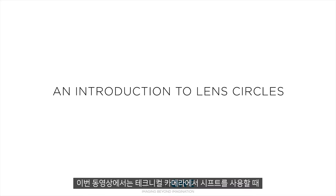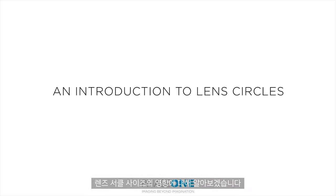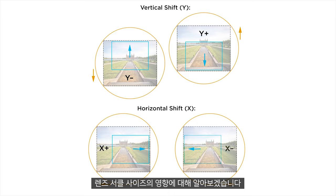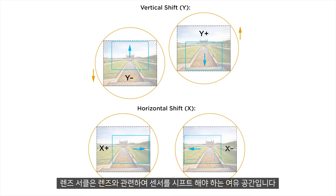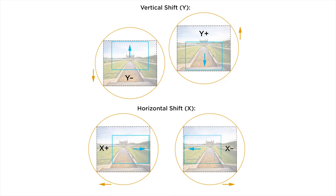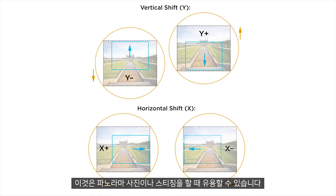In this video we will look at the effect of lens circle size whilst using shift on a technical camera. The lens circle is the available space we have to shift the sensor in relation to the lens. This can be good for panoramas or creating stitches.